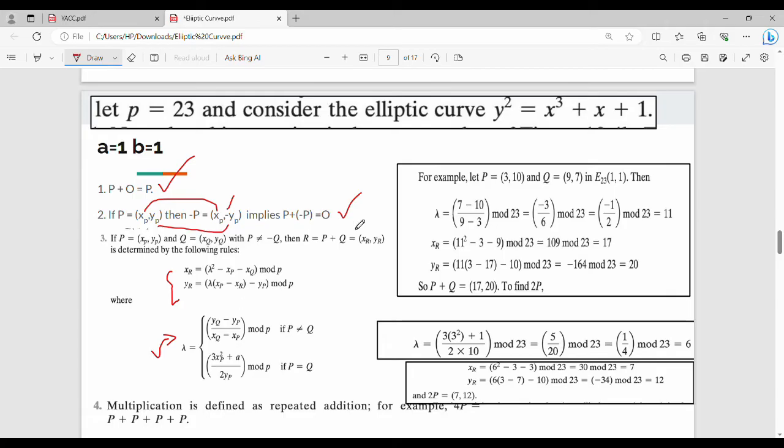Here's an example: P = (3,10), Q = (9,7), with a=1, b=1 in E₂₃(1,1). Since P and Q are different, λ = (yQ - yₚ)/(xQ - xₚ) = (7-10)/(9-3) mod 23. Computing this gives -3/6 mod 23 = -1/2 mod 23.